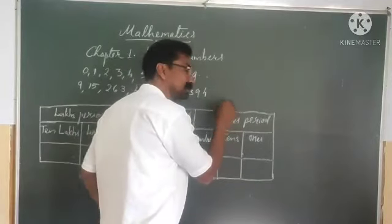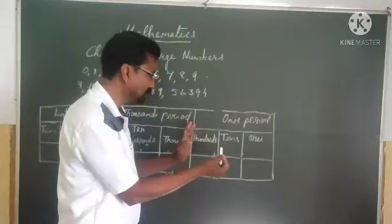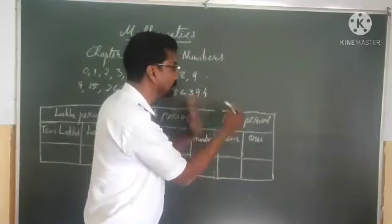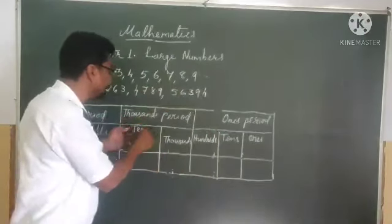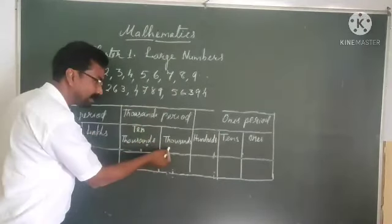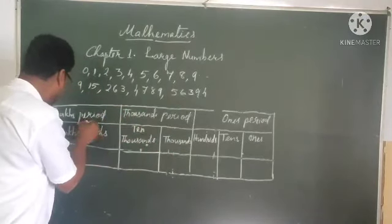First place one's period. In one's period divided into ones, tens, hundreds. After that, thousand period. In thousand period, thousands, ten thousands. After that lakh period,